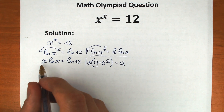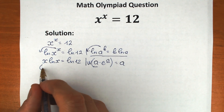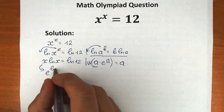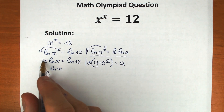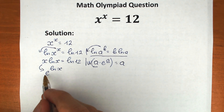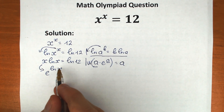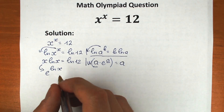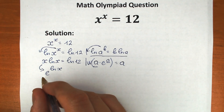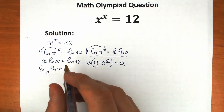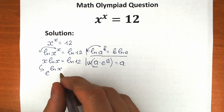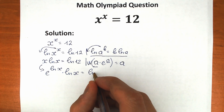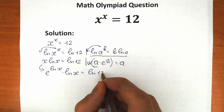To introduce e, we rewrite x as e to the power ln(x). This is exactly the same as x because e and natural log cancel each other. So we still have the same expression, and we can now write: e^(ln x) times ln(x) = ln(12).